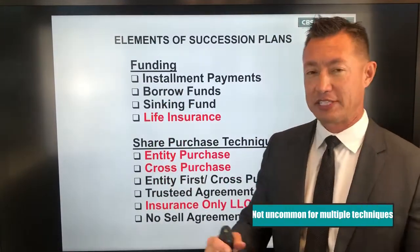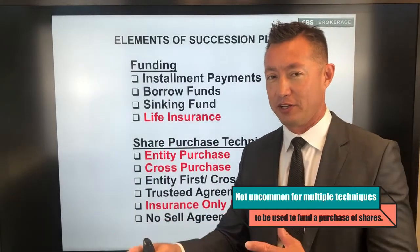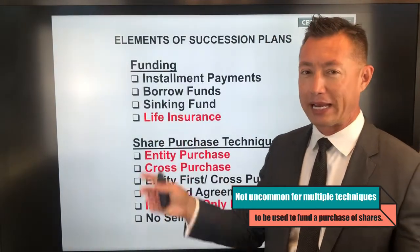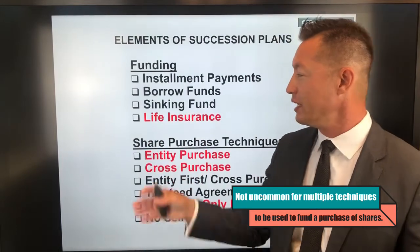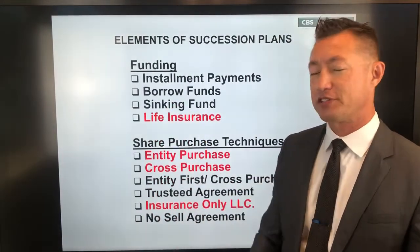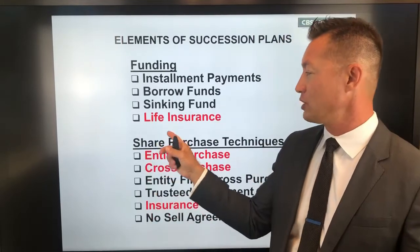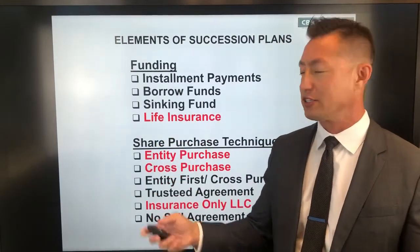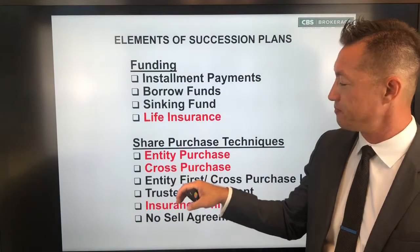Sinking funds — taking funds set aside in good operating years for an eventuality that might not happen, like a death event as a trigger — is not ideal either. Life insurance is ideal particularly for the death event, which is why it's pennies on the dollar, and that's why we see it so often used for buy-sell reasons.